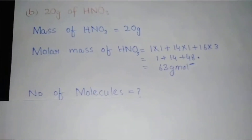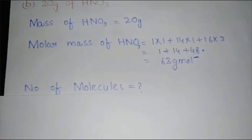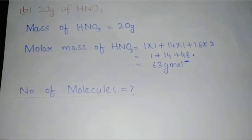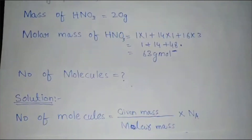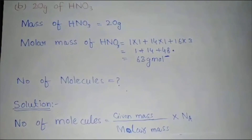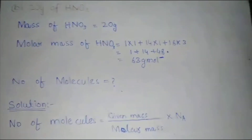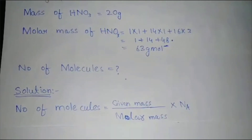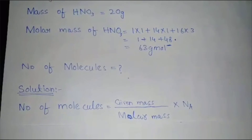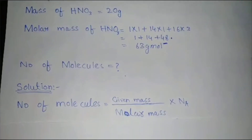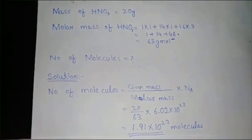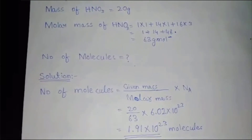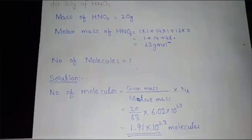Now we will write the formula again: number of molecules = (given mass / molar mass) × Avogadro's number. Given mass is 20 grams and molar mass is 63. Multiplying with Avogadro's number and calculating gives the answer: 1.91 × 10²³ molecules.